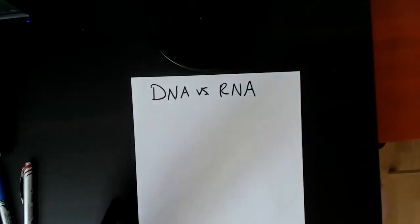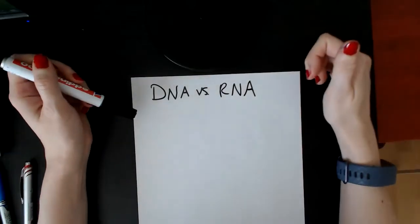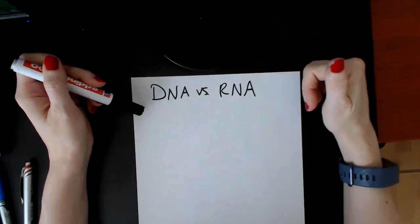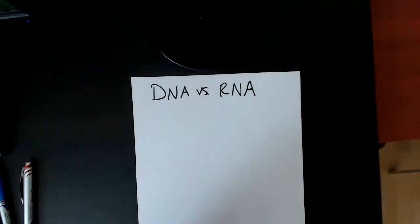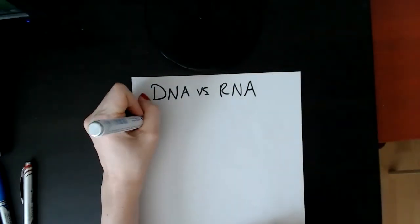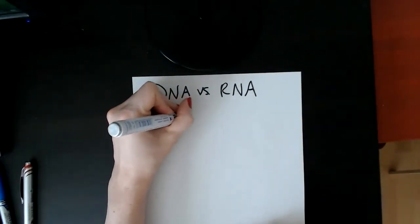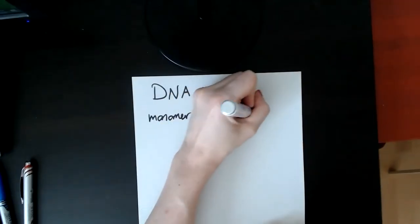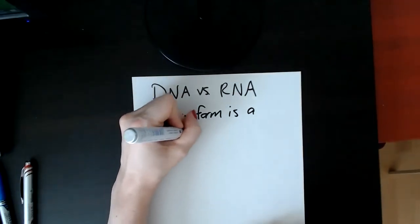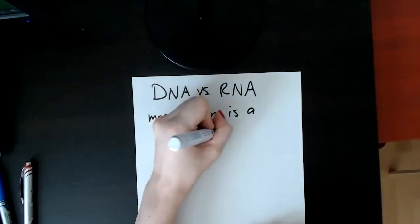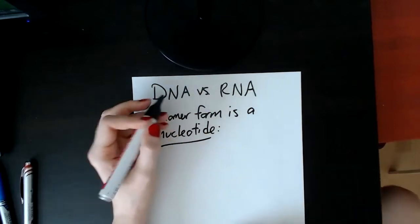DNA versus RNA — it's not some weird heavyweight matchup. You need to know the basic structure because for both of them, the monomer form — the single unit subunit — is called a nucleotide. And you need to know the basic shape of a nucleotide. For both of them, it's the same.